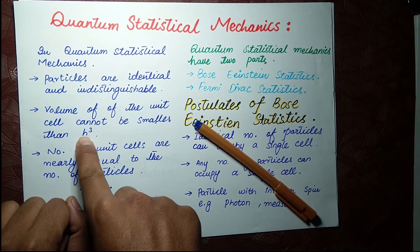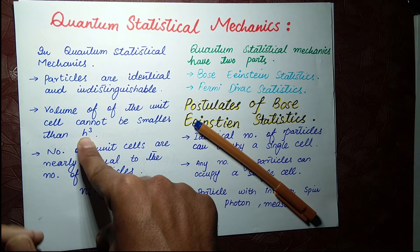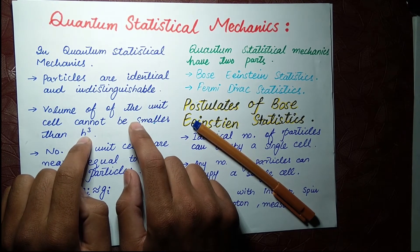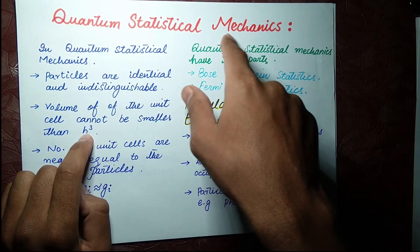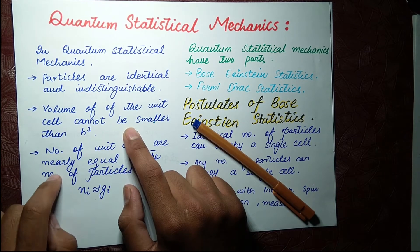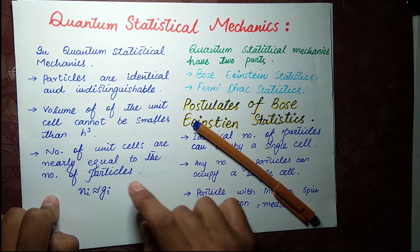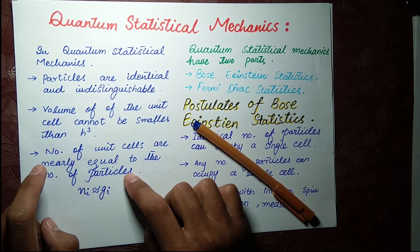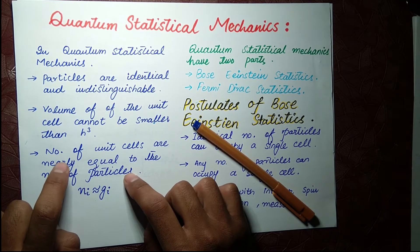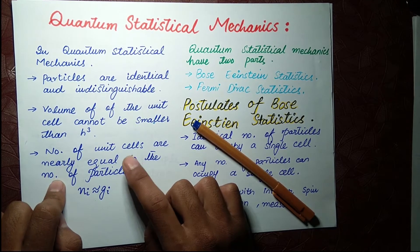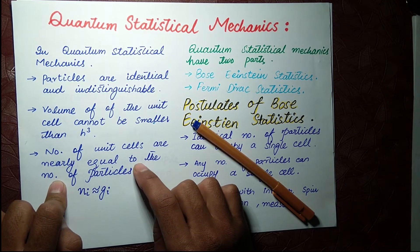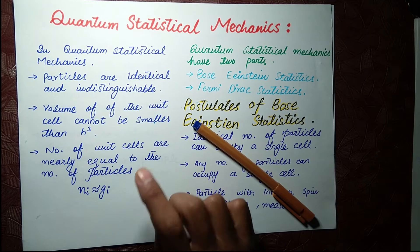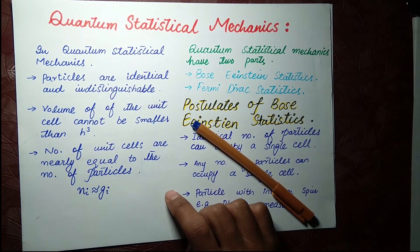The next postulate is that the volume of the unit cell cannot be smaller than h³, where h is Planck's constant. When the volume of a unit cell becomes smaller than h³, our quantum mechanics fails to describe it. Another postulate: in classical mechanics the number of particles is much greater than the number of unit cells, but in quantum statistics the number of unit cells and the number of particles are nearly equal.